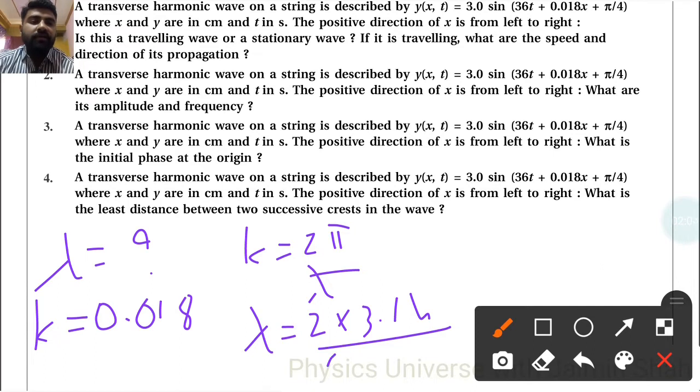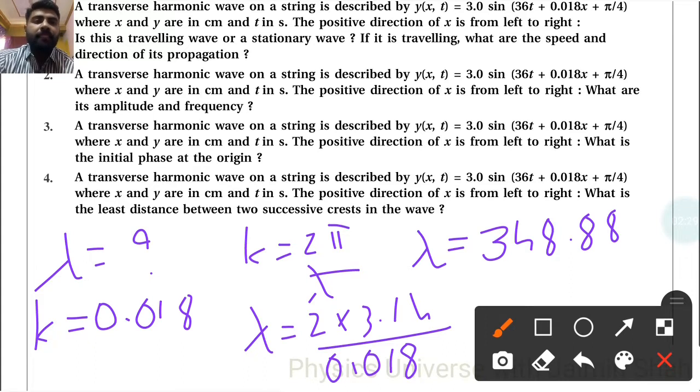See upon k sorry. k is 0.018. So k is 0.018. So 2 into 3.14 upon 0.018. So that is 348.88 right. This is our λ and λ is wavelength right. So this wavelength see here it is given x and y in centimeter. So it is in centimeter. In meter λ is equal to by 100. So 3.49 meter.